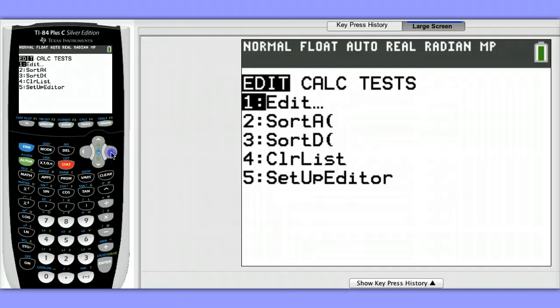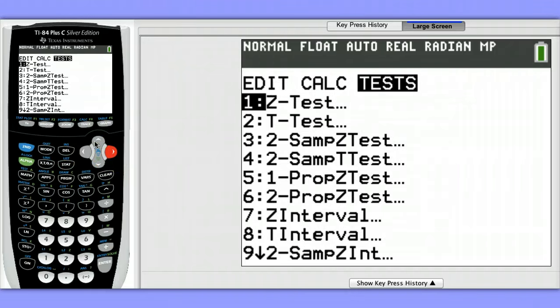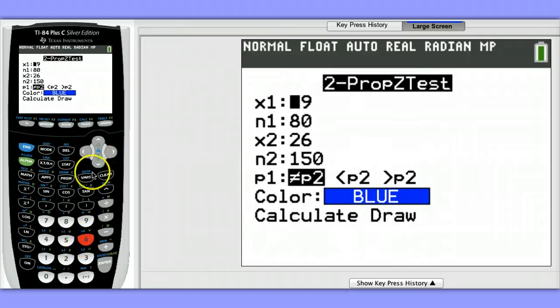Another option we could have done here is to draw the z-distribution. So let's choose two proportions z-test again, but come down here to where it says draw instead of calculate.